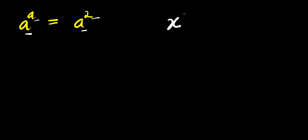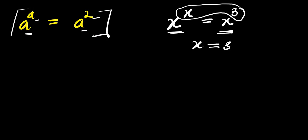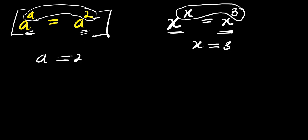Now, if you consider this identity — for instance, if you have x to the power of x and this equals x to the power of 3, when the bases are the same you compare the exponents, so we can say that x equals 3. If you apply the same identity here, you will say that a equals 2 because the bases are the same and you can compare the exponents. So that is one of the solutions, but there is also another solution. In this video, I'm going to show you how to solve and find all solutions of this particular exponential problem.